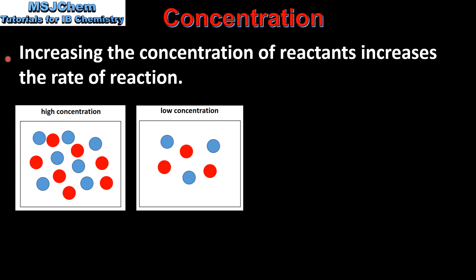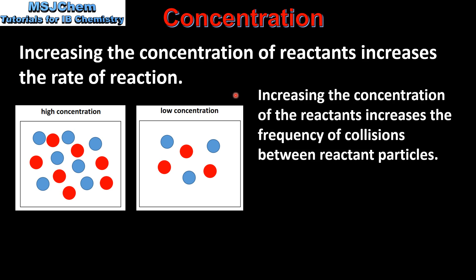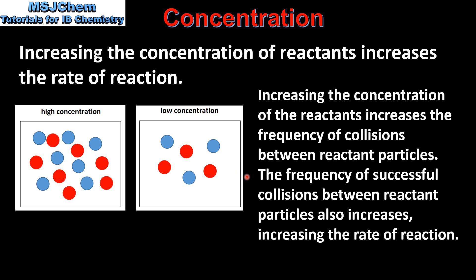Next we look at concentration. Increasing the concentration of reactants increases the rate of reaction. This is because increasing the concentration of the reactants increases the frequency of collisions between reactant particles. Therefore the frequency of successful collisions between reactant particles also increases, increasing the rate of reaction.